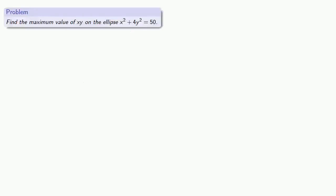Let's try to find the maximum value of xy on the ellipse, x squared plus 4y squared equals 50. So we'll let the maximum value be xy equals z. Then y is z over x, and we can substitute this into our equation.